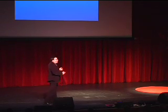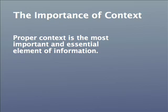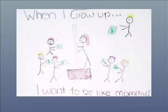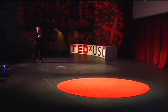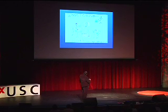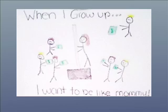I'm passionate about education. One of the most important things about education, something that we should stress, is the importance of context. Proper context is the most important element of information. Without context, or providing an improper context, you can lead the person to all sorts of beliefs. So this is an actual homework assignment handed in by a six-year-old to her teacher who asked, 'What do you want to be when you grow up?' She said, 'When I grow up, I want to be just like mommy.' You can see all the people with the money around. So what is mommy? A stripper or pole dancer.